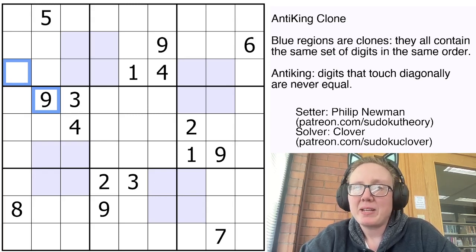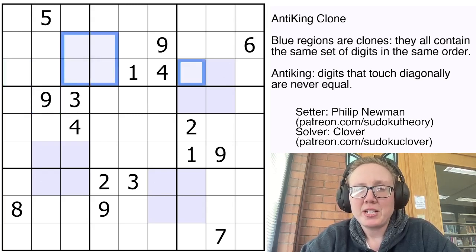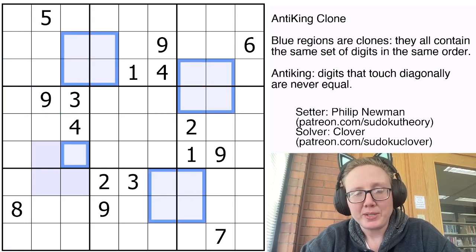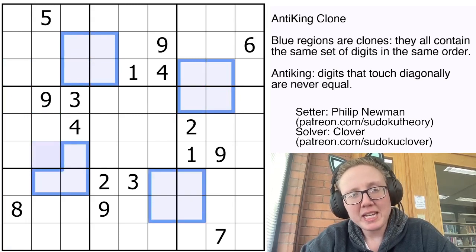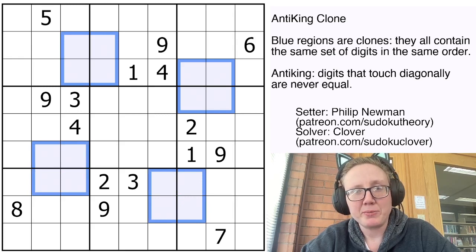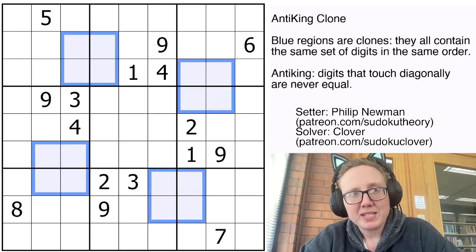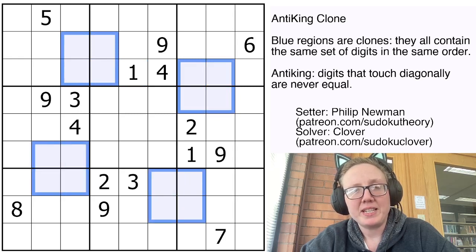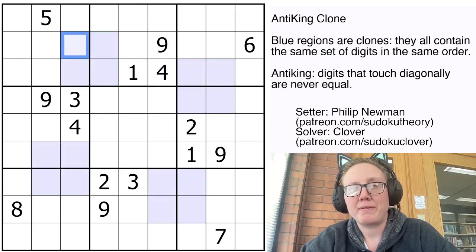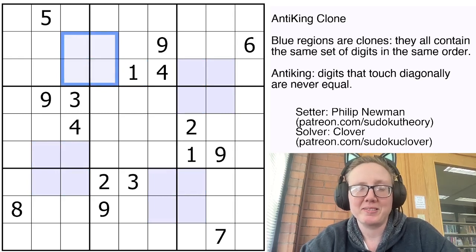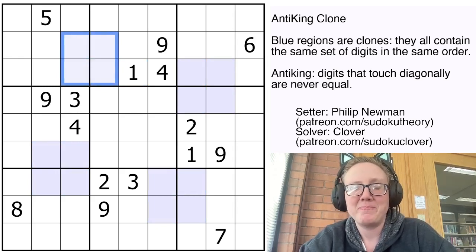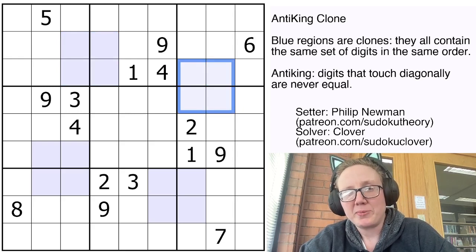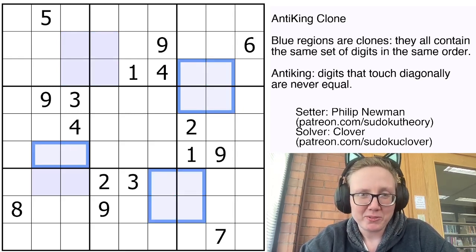And we have clones. These four blue shapes in the grid are all clone regions. Digits can potentially repeat within these regions. The rule says that each of these four regions has to contain exactly the same set of digits in the same orientation. So if one region were 1, 2, 3, 4 — which is clearly impossible, but just for the sake of argument — then all four would have to be 1, 2, 3, 4 in that same order.